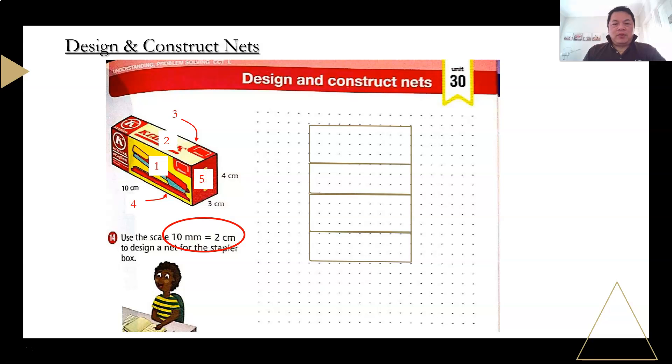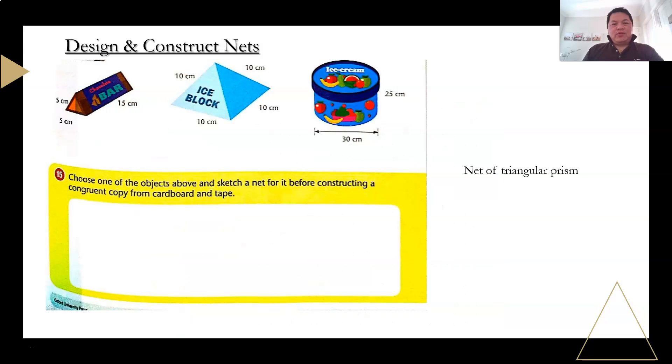So now let's draw number 5. Number 5 is actually a 3 by 4. So which is the same as this. 3 by 4. And then after that, I will have the other side, which is also a 3 by 4. So that is how it looks like on a net for this stapler box. Got it everyone? Step by step.